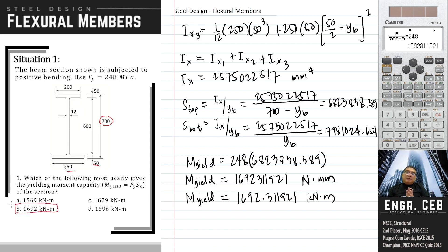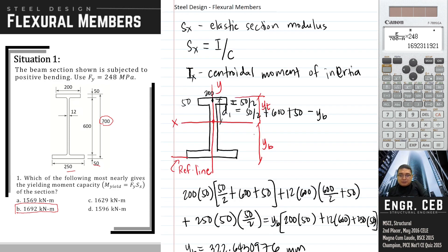If the top and bottom section moduli are equal, meaning there is only one section modulus, that happens when the section is symmetric with respect to the x-axis. This axis is called the elastic neutral axis, and the location of the geometric centroid is also the elastic neutral axis.